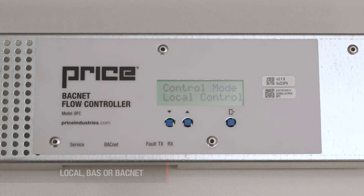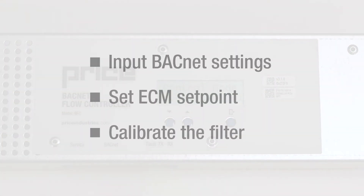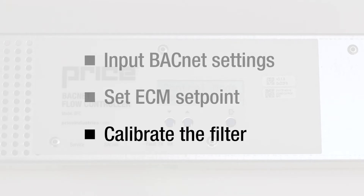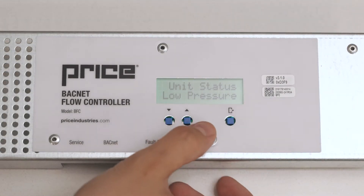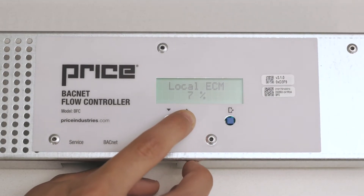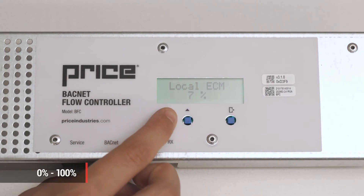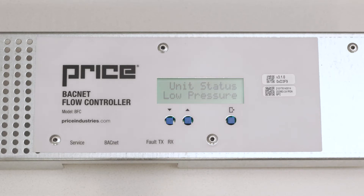On initial setup of the BFC, the following tasks should be completed in this order: input BACnet settings if applicable, set ECM set point, and calibrate the filter. To set the local ECM set point, use the arrow keys to adjust the set point from 0 to 100%. This should be done with the balancing team to confirm airflow rates. This can also be done over BACnet or using a signal from the BAS system.